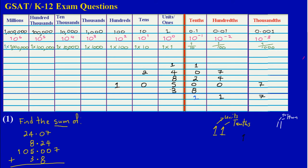Now in the units column I have: 3 plus 5 is 8, plus another 8 is 16, plus 4 is 20, plus the carried 1 is 21. So in my units column I've gotten 21. The right-hand digit — 1 — must stay in the units column, and the left-hand digit must be carried to the tens column.